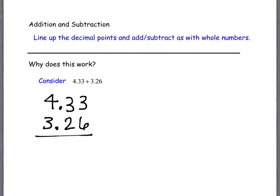You start on the very right, and you'd say 3 plus 6 is 9. Then you would go to the tenths place, which is 3 plus 2, which is 5. And then we would probably bring down the decimal next. And then we would do 4 plus 3 and get 7.